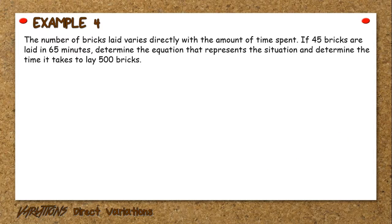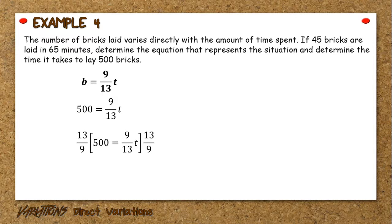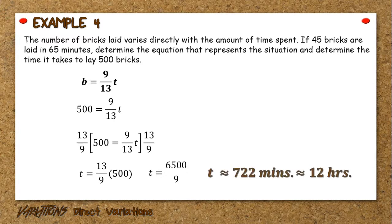Using the new equation, substitute 500 bricks for b, which results in 500 equals 9 over 13 times t. Multiply both sides by 13 over 9, the reciprocal of 9 over 13, giving t equals 13 over 9 times 500, or 6,500 over 9. T will be approximately 722 minutes and approximately 12 hours. Therefore, it takes approximately 12 hours to lay 500 bricks.